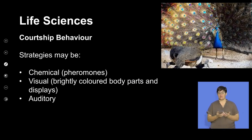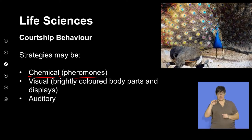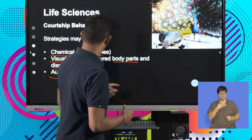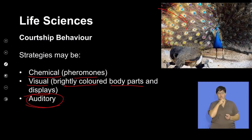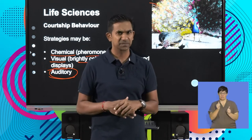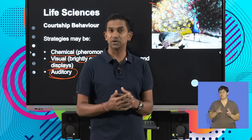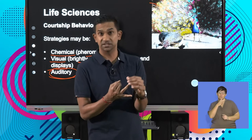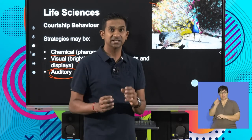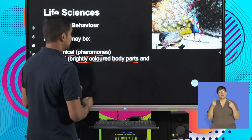Strategies during courtship include the release of chemicals or hormones called pheromones, visual display of brightly coloured body parts, or auditory stimuli. The peacock has an elaborate dance to attract females; frogs croak; birds make sounds — all forms of stimulation used to attract the most favourable mate. In natural selection, individuals with the most elaborate displays of feathers or the most appealing calls tend to be most attractive, contributing to the success of the species.